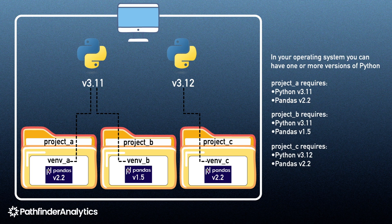Whenever you start on project A, you activate venv-a. Project B, you activate venv-b. Project C, you activate venv-c. That way, each codebase runs exactly on the Python version and dependencies it was built for — no surprises, no conflicts.